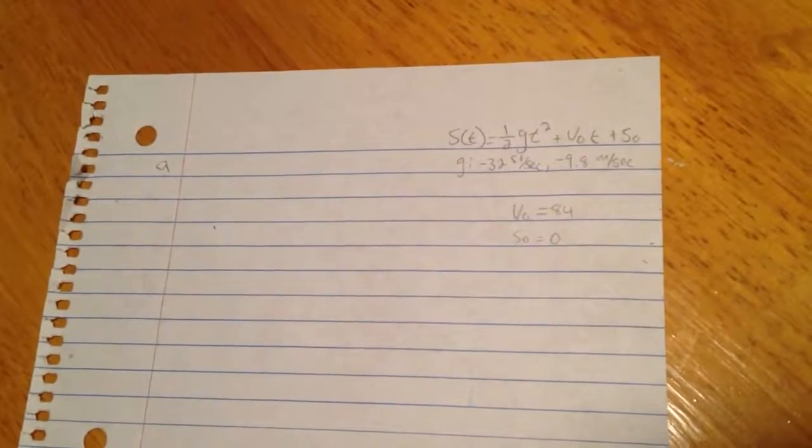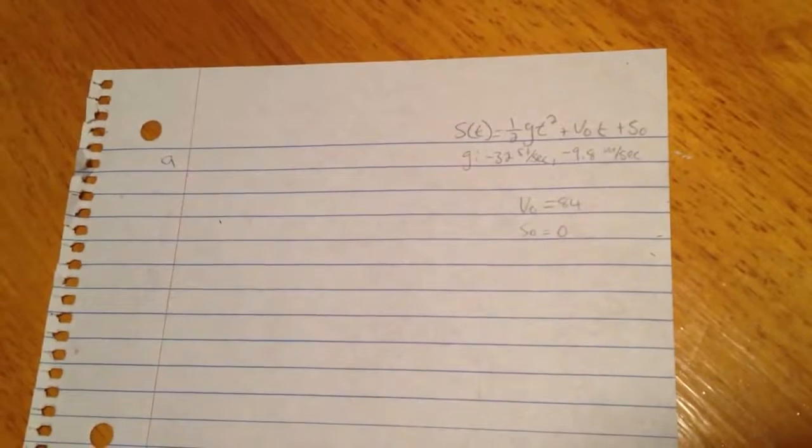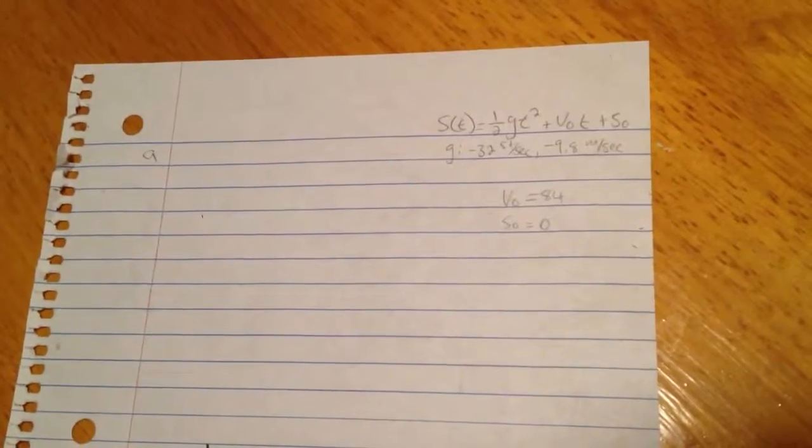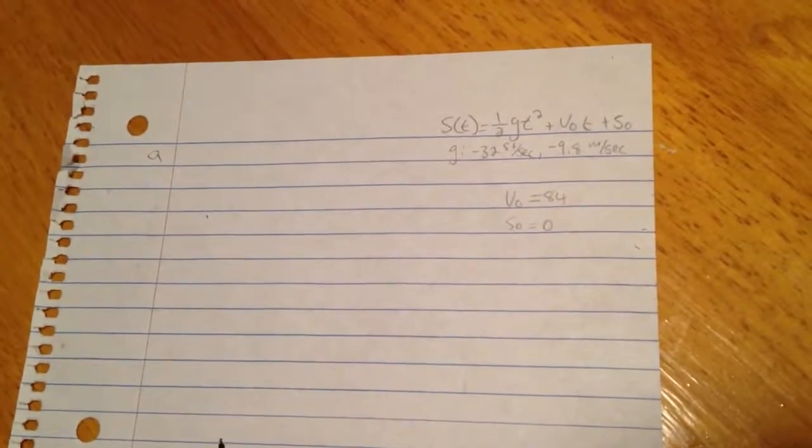So the question we're answering is: a projectile is shot upward from the surface of the Earth with an initial velocity of 84 meters per second. The first part is asking us to find the position for this projectile.